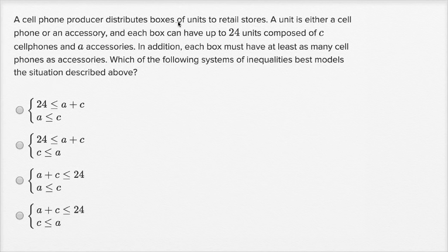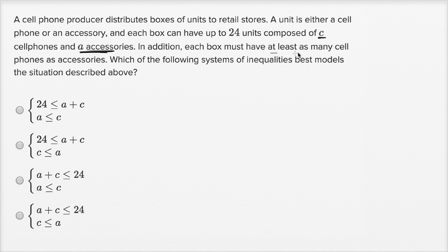A cell phone producer distributes boxes of units to retail stores. A unit is either a cell phone or an accessory, and each box can have up to 24 units composed of C cell phones and A accessories. In addition, each box must have at least as many cell phones as accessories. Which of the following systems of inequalities best models the situation described above?